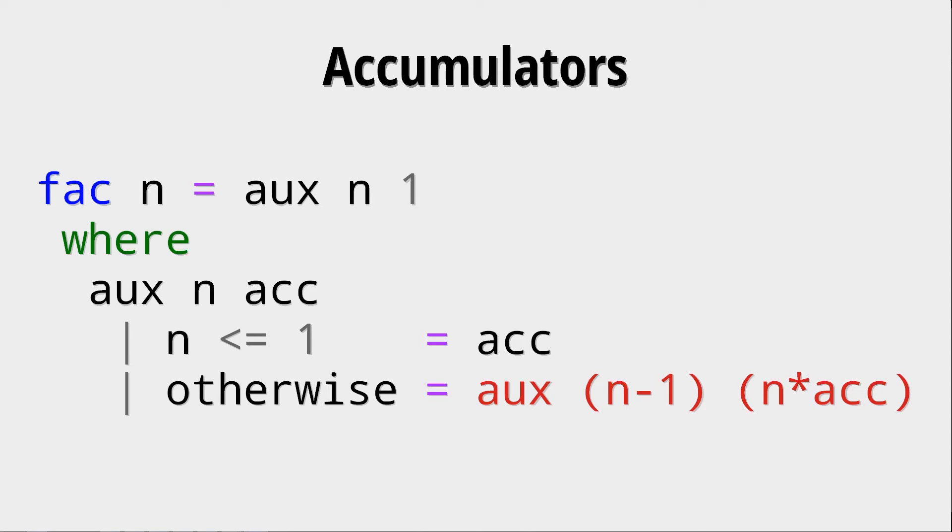The other possibility is to do a direct recursive call where we have no operation after it. Think about how we defined the faculty function before. We said that we take n and multiply it by whatever the result of the faculty n minus 1 is. So we did the recursive call and then did a computation. That is not what we do here because we compute n minus 1 and then we compute n times ACC and we throw that into the recursive call.